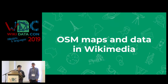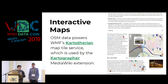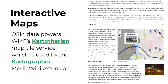So how do OpenStreetMap and Wikimedia use each other's data? First, we have interactive maps. OpenStreetMap data powers the Wikimedia Foundation's Kartographer Map Tile Service, which is used by the Kartographer MediaWiki extension. Basically, anytime you see an interactive map on any Wikimedia project, that is usually powered by the Kartographer Map Tile Service. For example, here's the interactive map for Berlin in the English Wikivoyage — the base map there is all coming from OpenStreetMap.